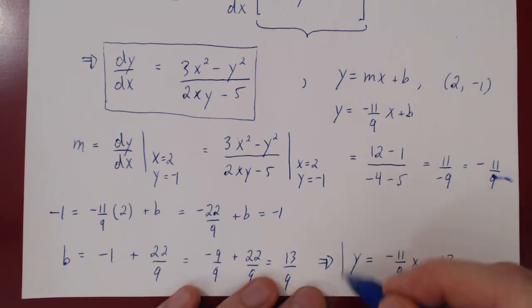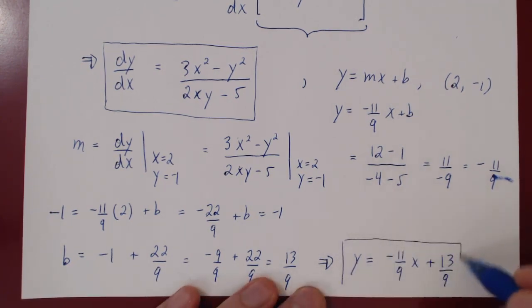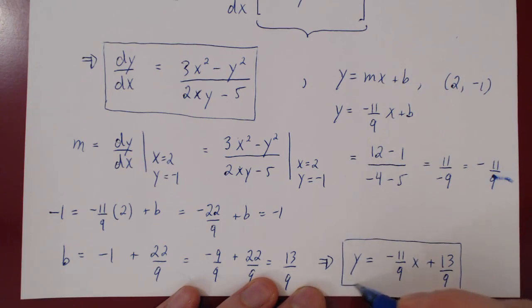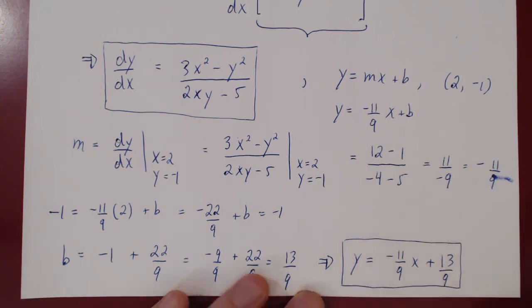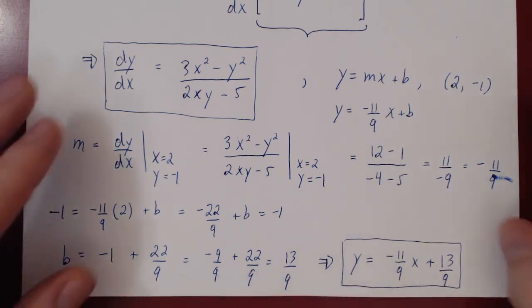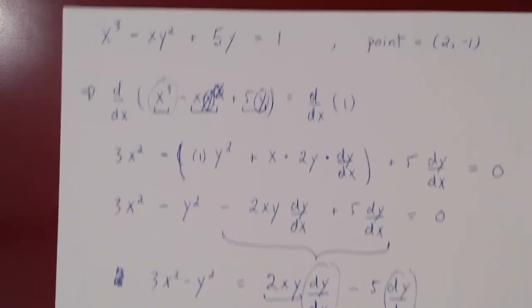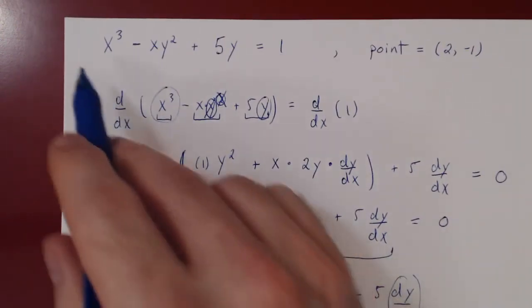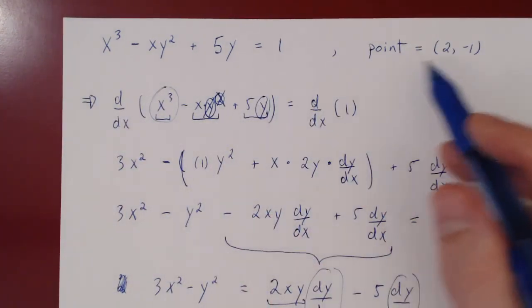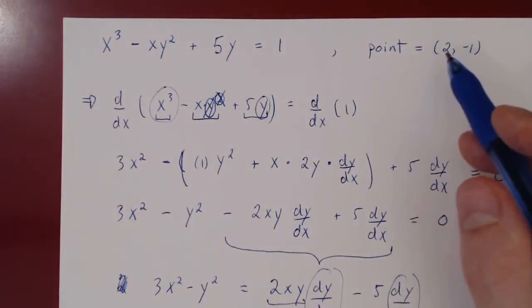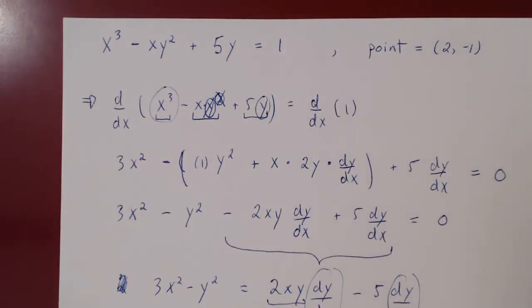And there you have it. We have the equation of the tangent line to the curve at the point x equals 2, y equals negative 1. Thank you.